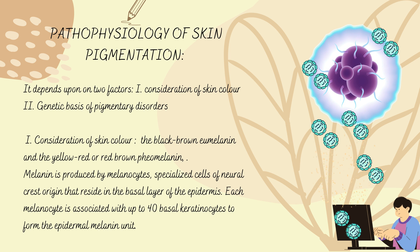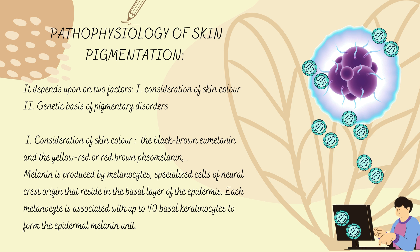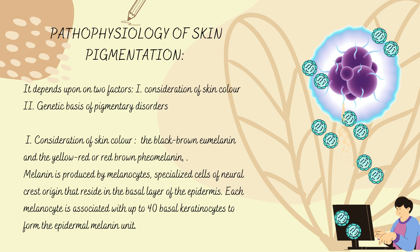The pathophysiology of skin pigmentation depends upon two factors: first, consideration of skin color; second, the genetic basis of pigment disorders. The color of human skin is primarily determined by two types of melanin: eumelanin and pheomelanin. Eumelanin produces black or brown color, while pheomelanin produces yellow, red, or reddish-brown color.